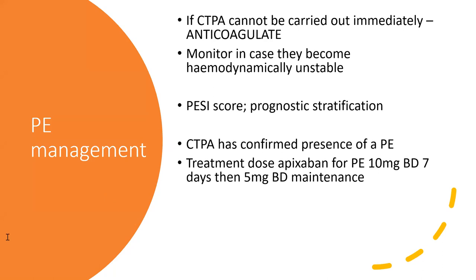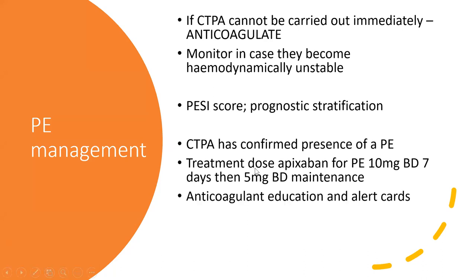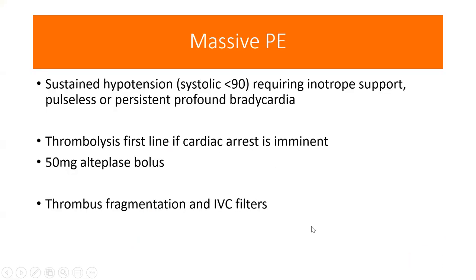For an unprovoked PE you'd investigate the underlying cause — underlying cancers or a thrombotic disorder. For a massive PE — defined as hypotension, requiring inotropic support, pulseless, or persistent profound bradycardia — thrombolyse first line: 50mg of alteplase all at once. Other options include thrombus fragmentation and IVC filters.